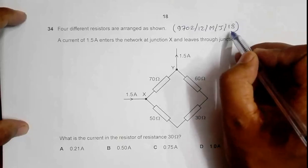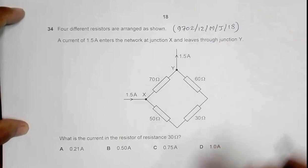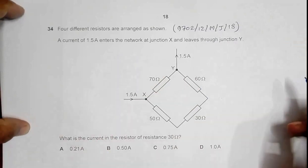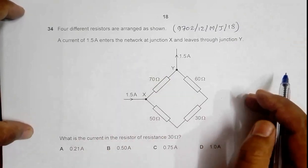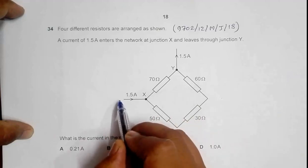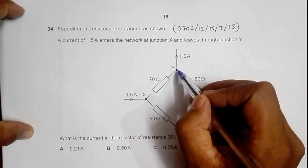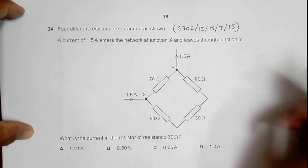Hello, this is 2018 major paper 1-2, question number 34. It shows four different resistors. A current of 1.5 ampere flows into X and it goes from Y in the form of 1.5 ampere.